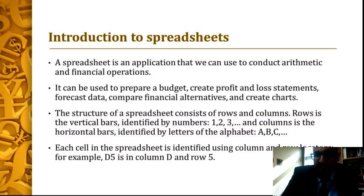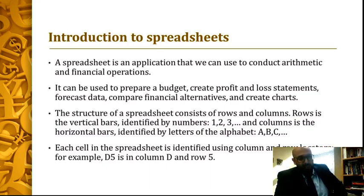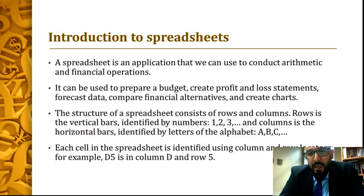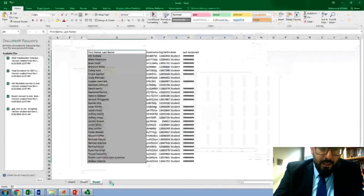We can use spreadsheets to prepare budgets, create profit-and-loss statements, forecast data, compare financial alternatives, and create charts to support our conclusions. The structure of a spreadsheet consists of rows and columns. Rows are the horizontal bars identified by numbers (1, 2, 3), and columns are the vertical bars identified by letters (A, B, C). Each cell is defined using a column and row reference — for example, D5 is in column D and row 5.